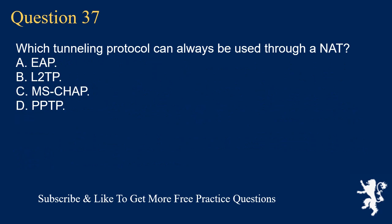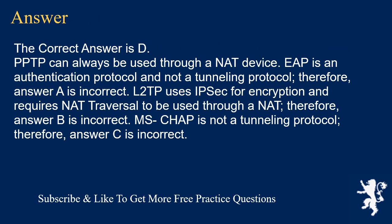Question 37. Which tunneling protocol can always be used through a NAT? A. EAP. B. L2TP. C. MSCHAP. D. PPTP. The correct answer is D. PPTP can always be used through a NAT device. EAP is an authentication protocol and not a tunneling protocol. Therefore, answer A is incorrect. L2TP uses IPsec for encryption and requires NAT traversal to be used through a NAT. Therefore, answer B is incorrect. MSCHAP is not a tunneling protocol. Therefore, answer C is incorrect.